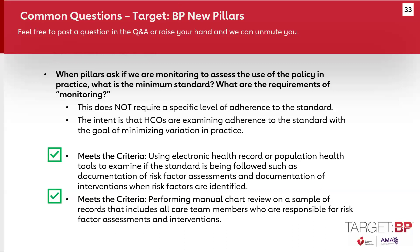Using your electronic health record or population health tool to pull reports where documentation reflects adherence to your policy is a perfectly appropriate way to assess performance. Similarly, if you don't have that capability in your information systems, pulling a sample and doing a manual chart review — looking at the team members responsible for that care and seeing if they are performing it — is another example that would meet that criteria.